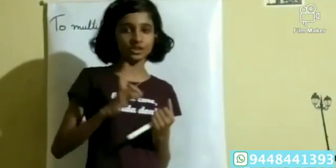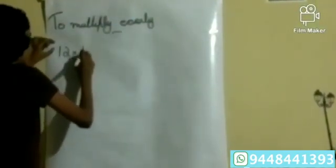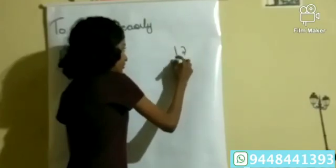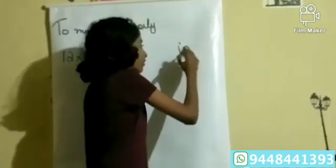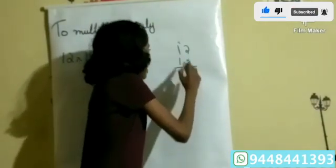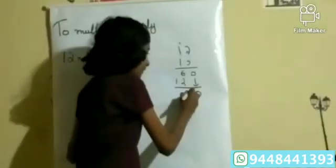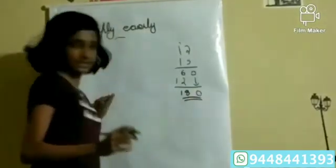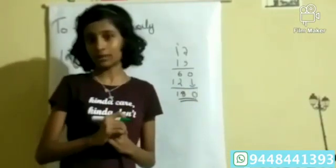Now I am going to show you how to multiply easily. First, we can take a 2-digit number: 12 into 15. How do we multiply it normally? We write 12 into 15. 5 times 2 is 10, carry over 1. 5 times 1 is 5 plus carry 1 is 6. Then 1 times 2 is 2, 1 times 1 is 1. Adding gives 180. But this is the normal method and it takes time. I will show you a very simple method.